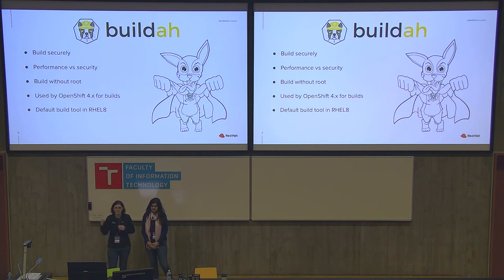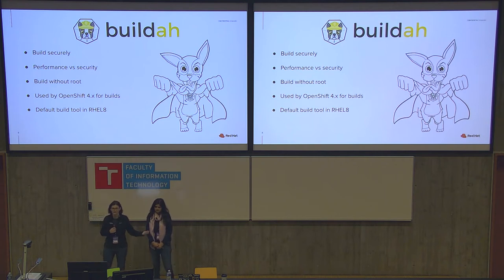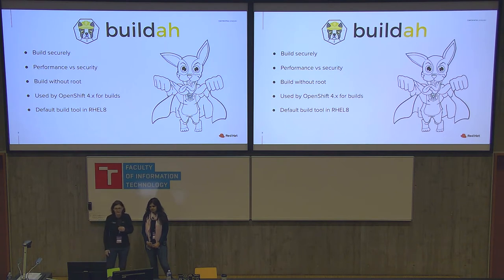I always run rootless until I get stopped — if I'm trying to do something that requires root on my system. Because with rootless, it works up to a certain point, but just because you're running a rootless container doesn't mean you can go and do something on your local host, like mount /etc. My recommendation: just run rootless until you can't, and then for those special circumstances, go with root.